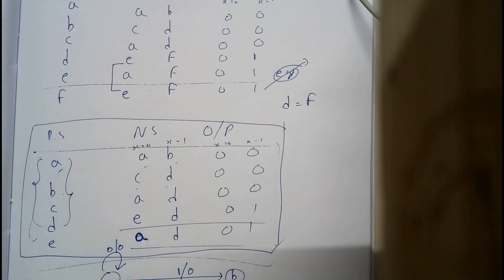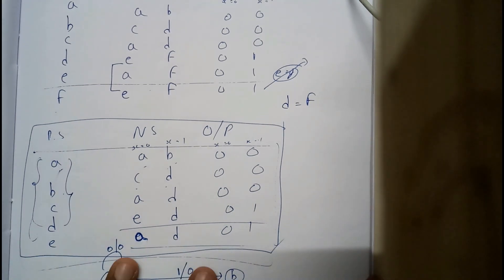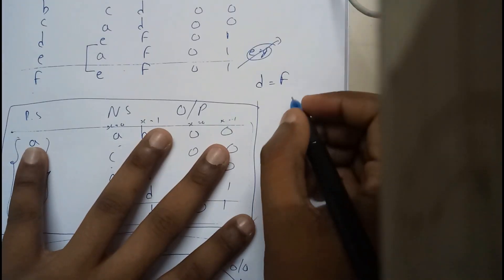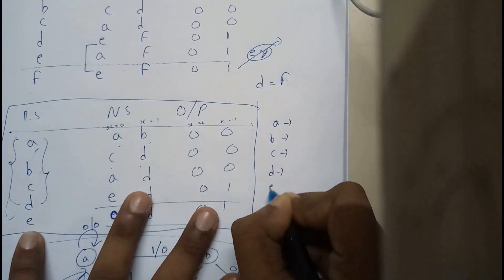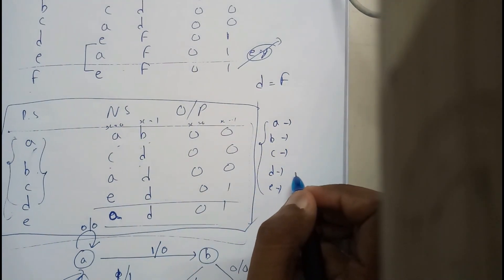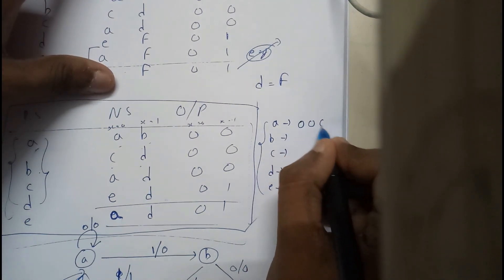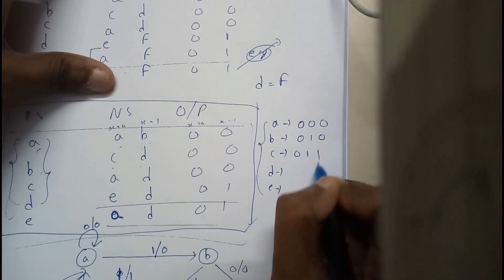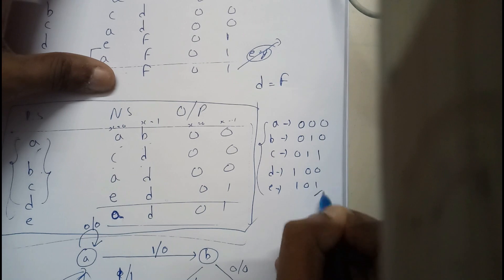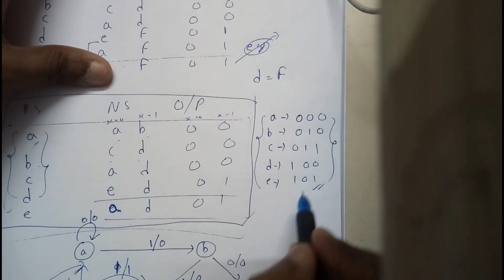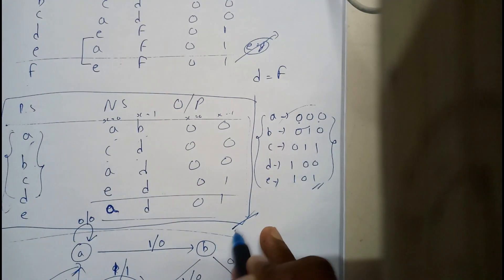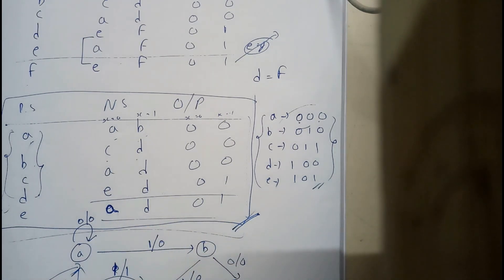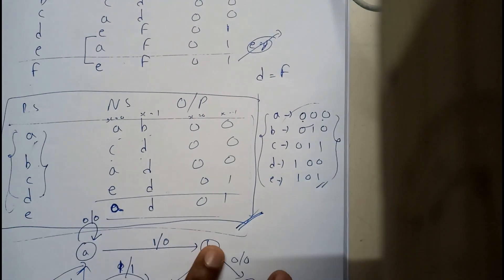We change A to a binary code, B to a binary code, C, D, and E likewise. There is no compulsory rule for which code to assign. For example, A could be 000, B could be 001, and so on. We simply replace A, B, C, D, E with these binary values — and that process is called state assignment.